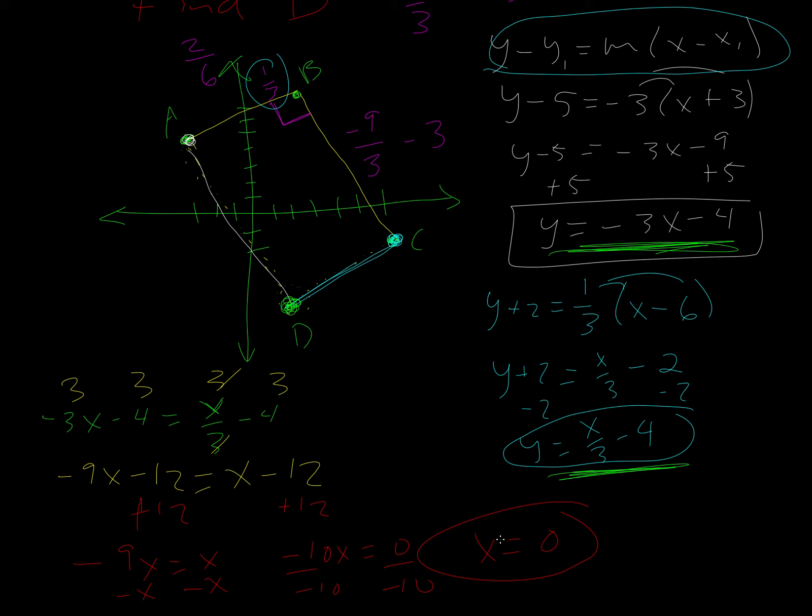And then, let's see. Okay, so X equals zero. So all we need to do is plug it into one of the originals. This one actually looks easier. So Y equals negative three times zero minus four. And that goes to zero. So Y equals negative four. We have the X value and the Y value. So zero comma negative four is actually where D is supposed to be.